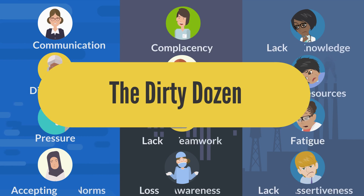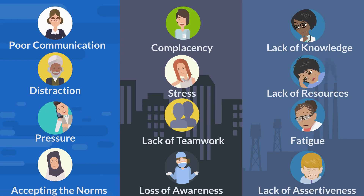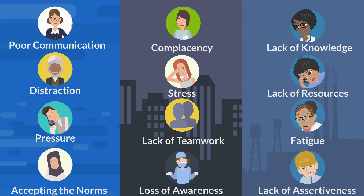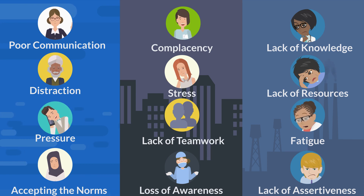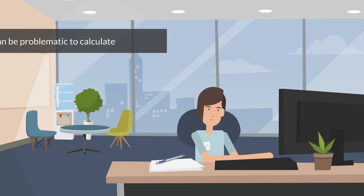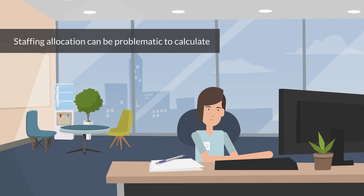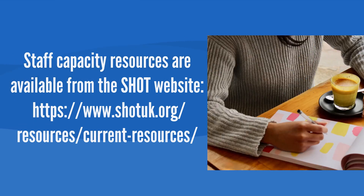The dirty dozen refers to 12 of the most common human error preconditions or conditions that can act as precursors to accidents or incidents. These 12 elements influence people to make mistakes and are certainly compounded by staff shortages, so it is imperative that we have adequate staff to ensure safe patient care. There is a simple staffing capacity template available on the SHOT website, and capacity plans should be reviewed regularly and updated for any changes in workload or training requirements.